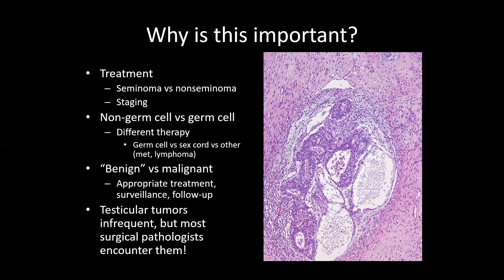A non-germ cell tumor, such as a sex cord stromal tumor, would have very different treatment. Whereas germ cell tumors are very sensitive to specific chemotherapy, sex cord stromal tumors have no specific efficacious therapy. Resection of all disease is the main treatment for malignant sex cord stromal tumors. Metastases from another cancer or lymphoma would be treated according to those cancers. Differentiating these testicular tumor types is therefore important for clinical management.